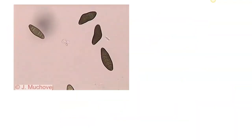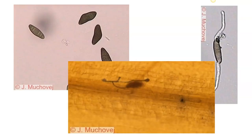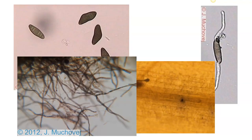Sometimes fungi reproduce by asexual spores called conidia. When they germinate, they produce what we call hyphae, which are elongate filaments. The hyphae continue to grow — in this particular case, it is infecting a plant, growing over the plant surface and ingressing into the plant. If left unchecked, it will continue to produce a mycelium. The mycelium is basically made up of these little thread-like strands called hyphae.